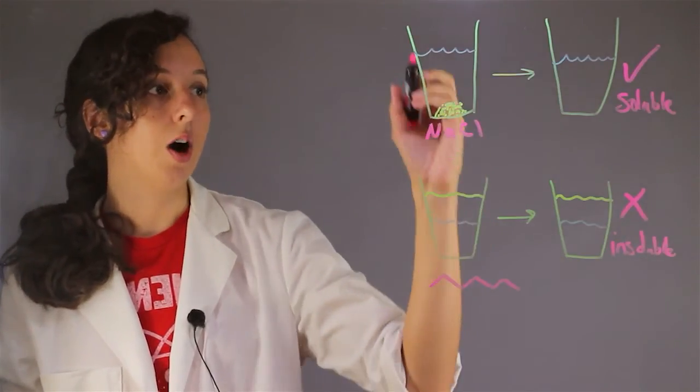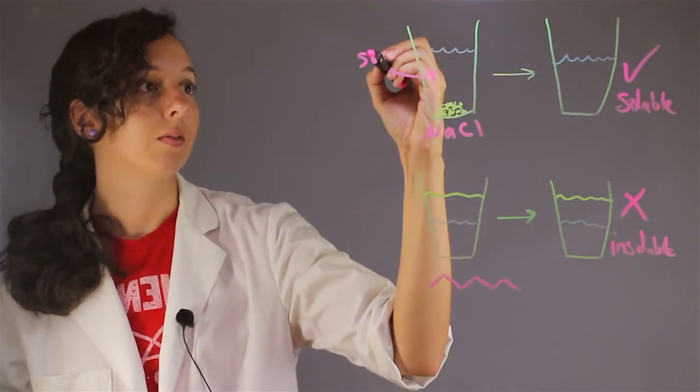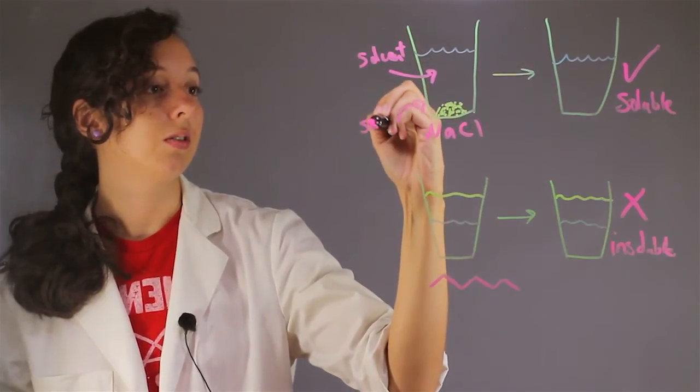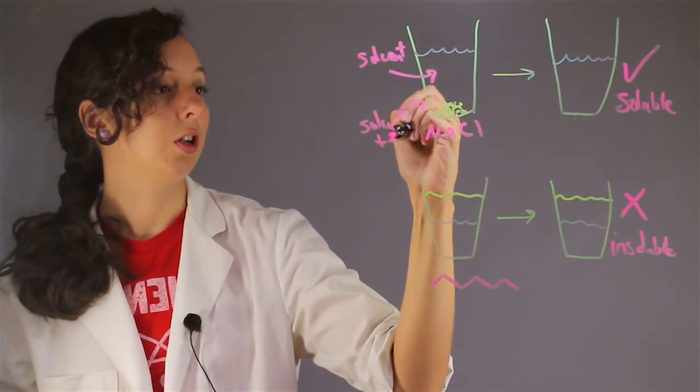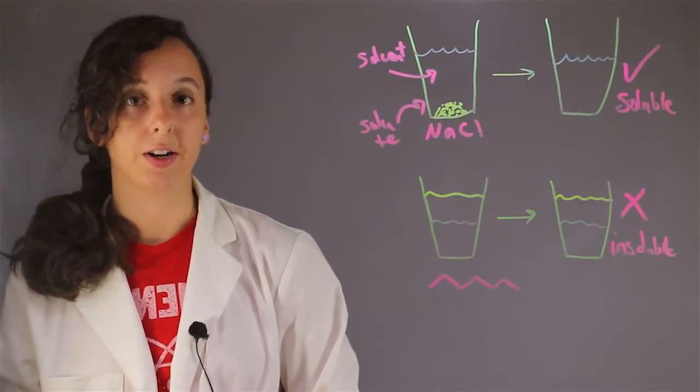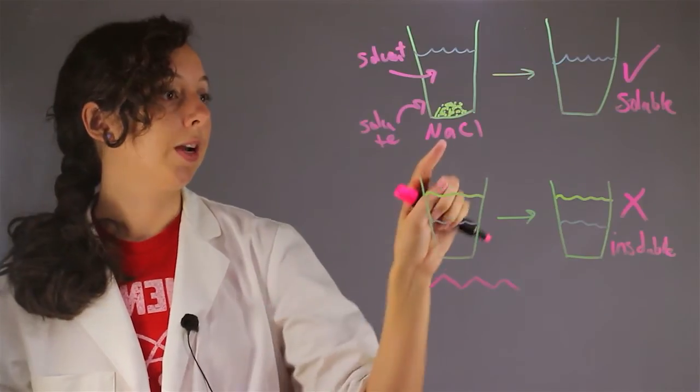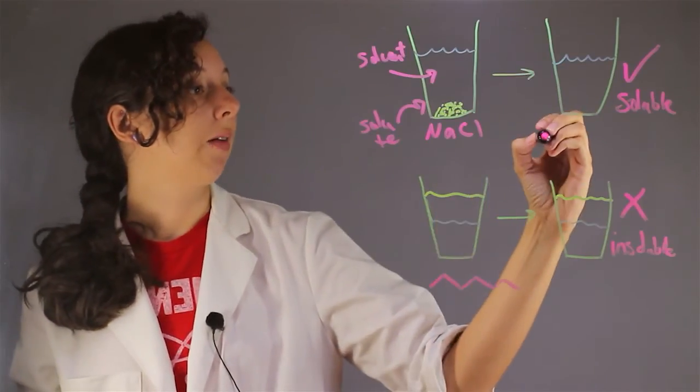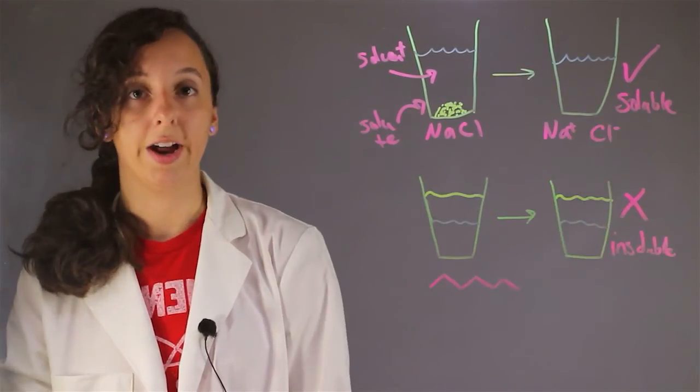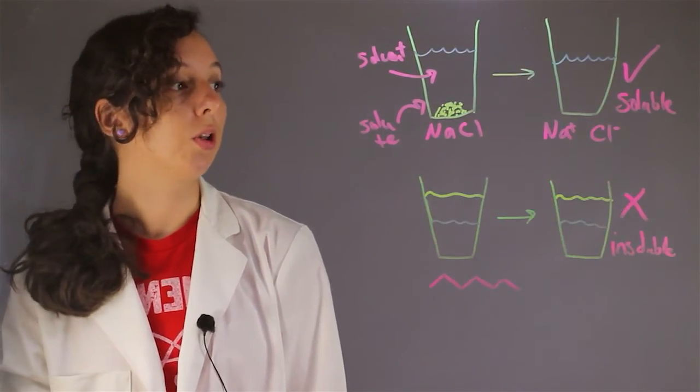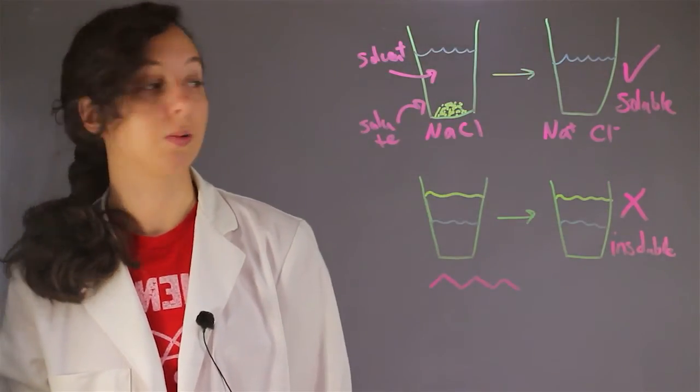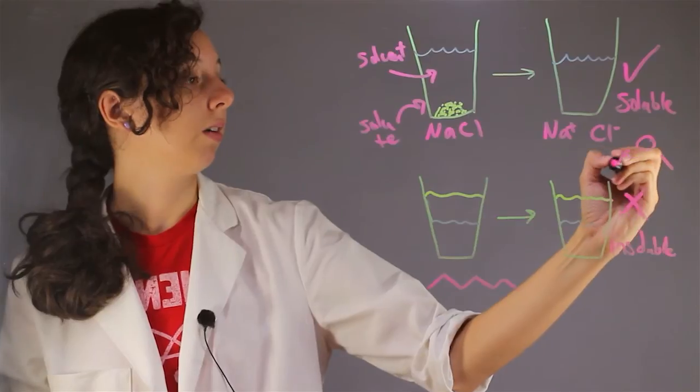So in our first example, our water is our solvent and our salt is our solute. And sodium chloride is actually ionically bonded. And so when you break it apart and look at it in solution, you're going to have a bunch of positively charged sodiums and negatively charged chloride ions. And this is super polar. So ionic bonds, super polar. Water is also super polar. Water, very polar.